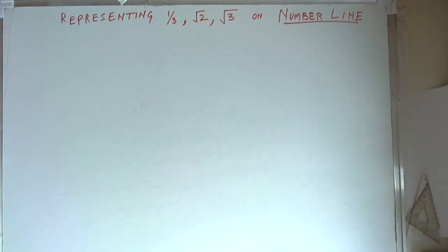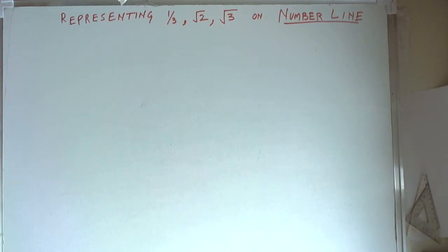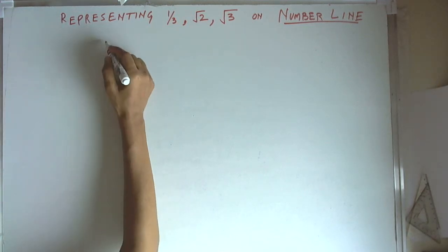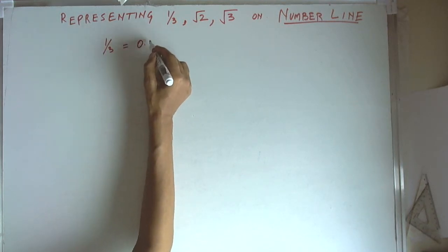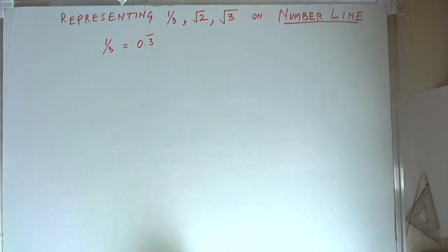We will learn how to represent numbers like 1/3, square root of 2, and square root of 3 on the number line. Note that 1/3 is a recurring non-terminating fraction, and therefore if we write 1/3, it will be 0.3 with 3 repeating.